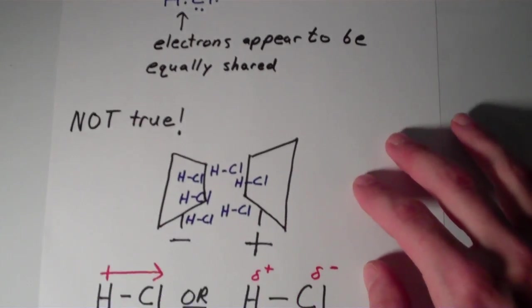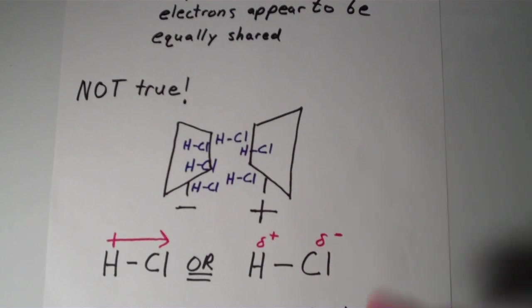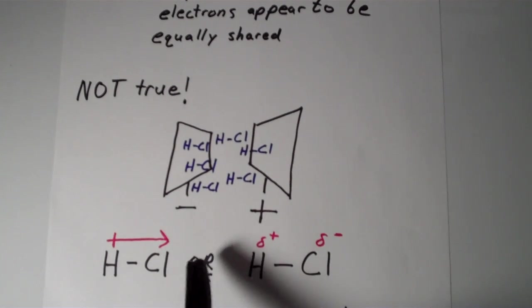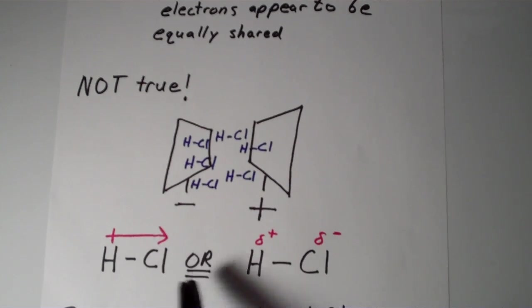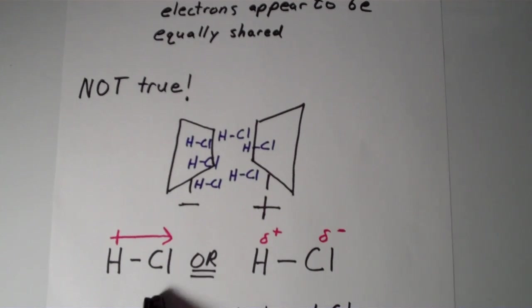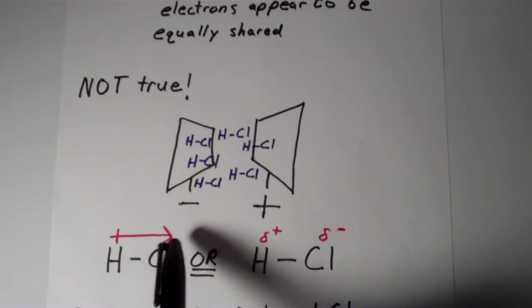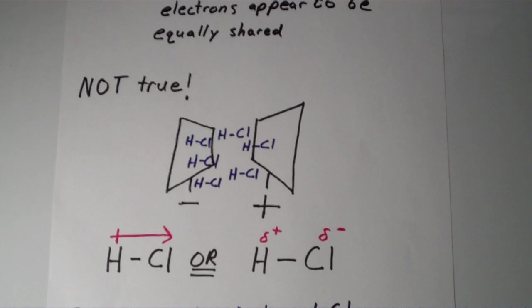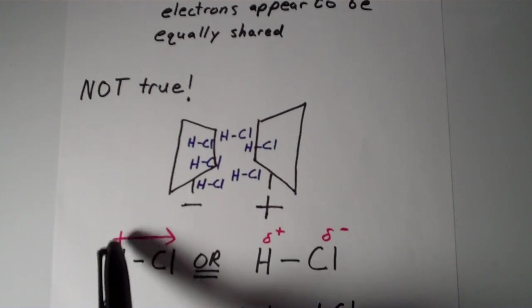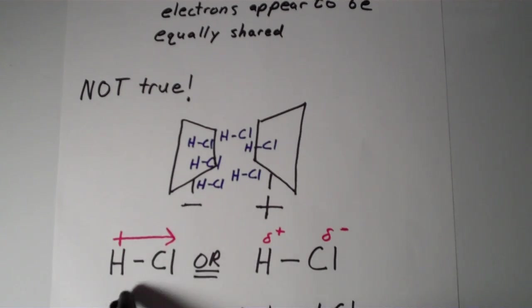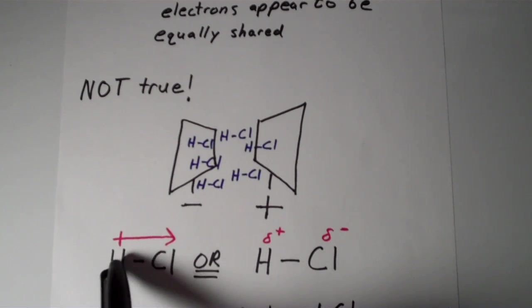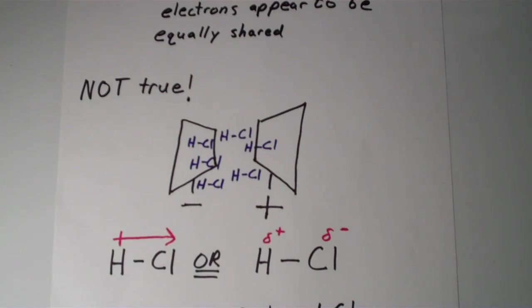The way that we represent this, you can do it one of two ways. You can use this little arrow which points to the atom that is more electron rich, so the arrow points to the chlorine. The way that you can remember this is by just saying that the tail of the arrow looks like a plus sign. So the hydrogen has a partial positive charge, and the chlorine has a partial negative charge.